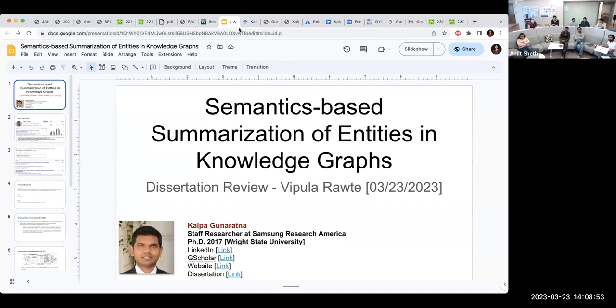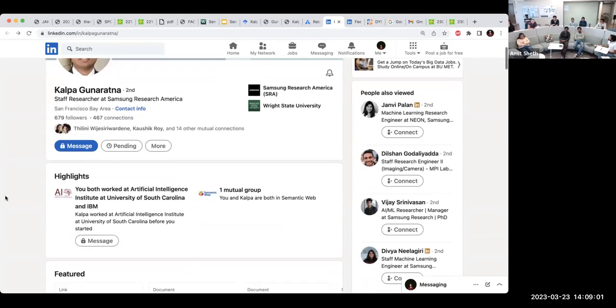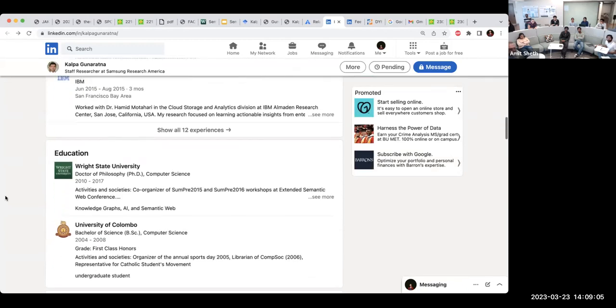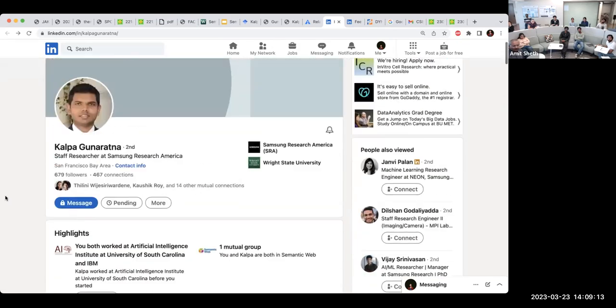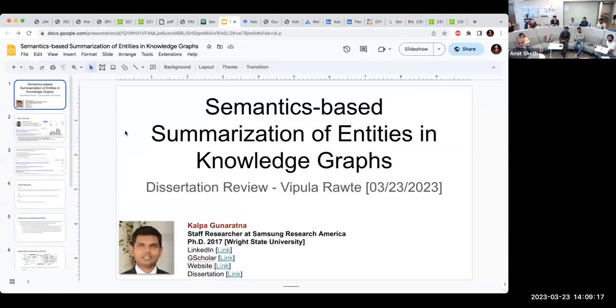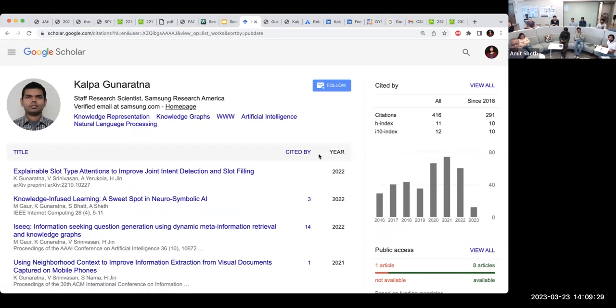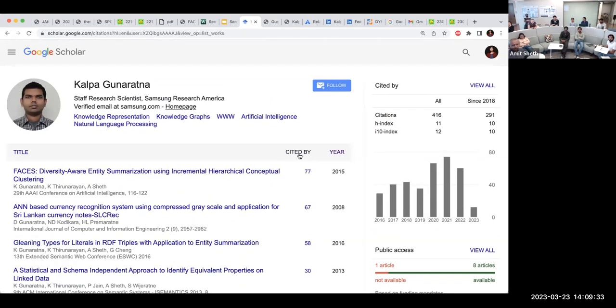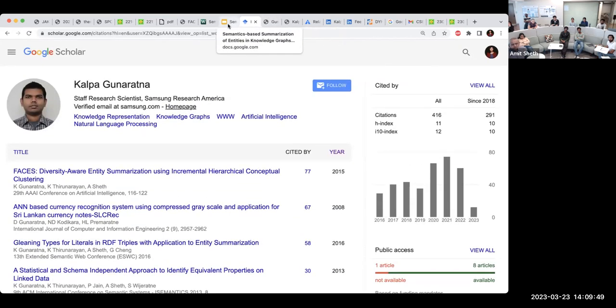You can see the LinkedIn page. But first, I had a staff researcher at Snaps and Dr. Prasad, and in the media, and he got his Bachelor in Sri Lanka, and then he did his PhD with Dr. Shetan and Dr. Prasad, and his dissertation was on semantics-based summarization of entities and knowledge graphs. His current Google Scholar page has around 416 citations, and the most cited paper was his work during his PhD.